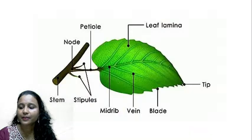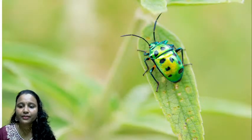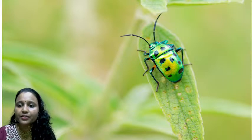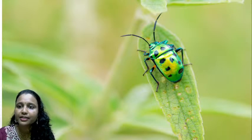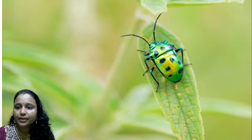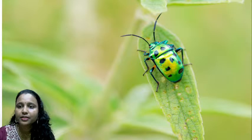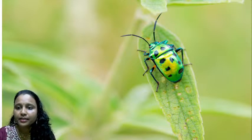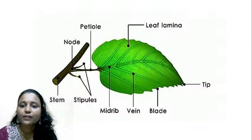Today I am going to explain the first lesson from 6th standard, that is the leaf. Before explaining the leaf, we have studied the different parts of the plant. The different parts of the plant are root, stem, leaves, fruit, and flower. But this lesson is all related to leaf, so we are going to discuss each and every point related to the leaf. We will start with the structure of leaf — structure means parts of the leaf.